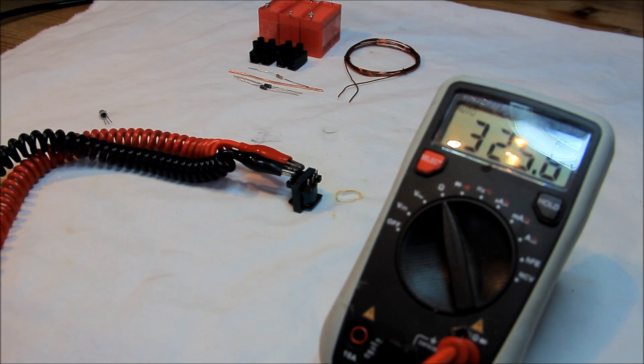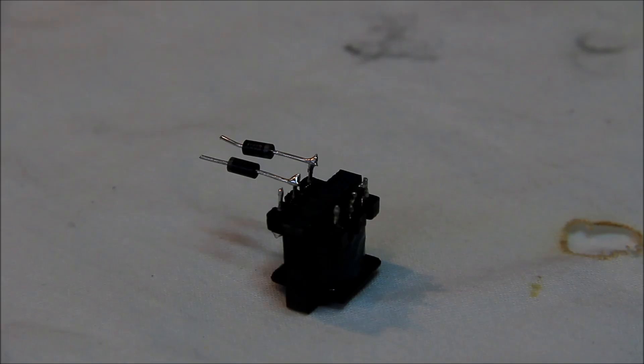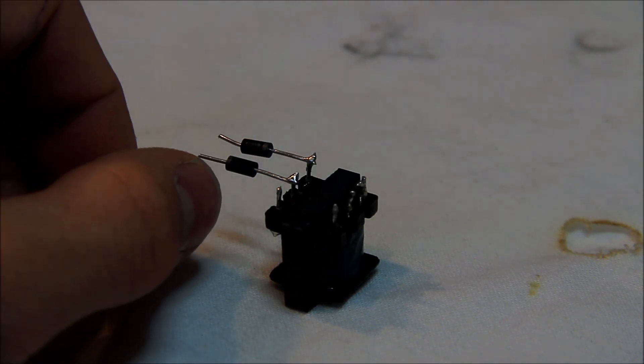Now we need our transformer. The coil with the highest resistance is our secondary coil. Now we need the two diodes and solder them on the pins like this. One diode must point toward the pin and the other diode must point away from this pin. We have the mark here and here.